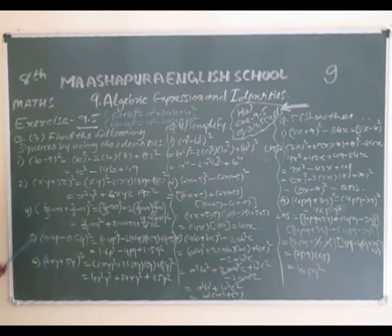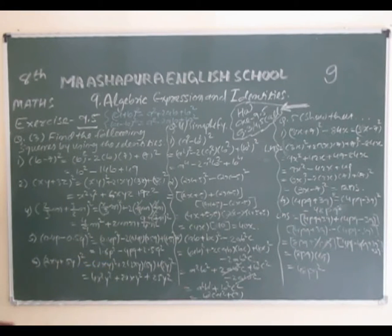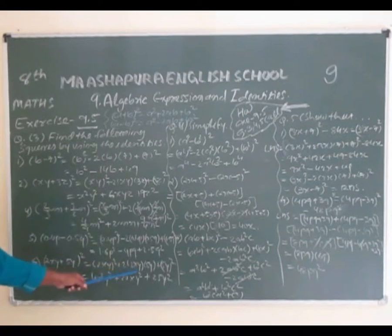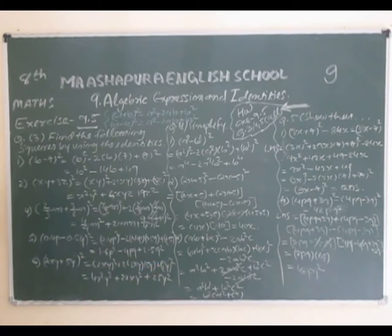One more example from question number 3: (2xy + 5y)². First term squared = (2xy)² = 4x²y², plus 2 × 2xy × 5y = 20xy², plus (5y)² = 25y².